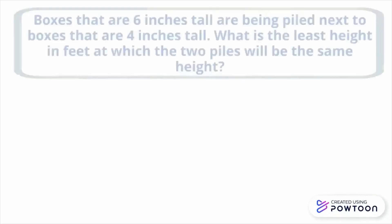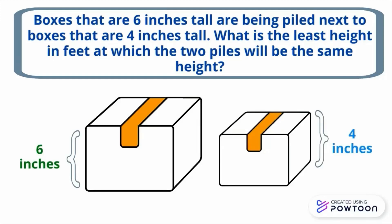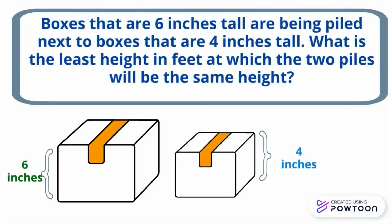Let us have problem number 2. Boxes that are 6 inches tall are being piled next to boxes that are 4 inches tall. What is the least height in feet at which the two piles will be the same height? The keywords are 'least' and 'the same,' so we will use LCM — the least common multiple.